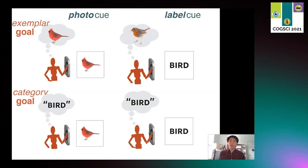Finally, to complete our 2x2 design, the fourth group was cued with a label and they were asked to produce a generic drawing of the category. To give you a sense of what the tasks look like from the participants' perspective, here is a demo of a single trial from the photo cue exemplar goal condition.